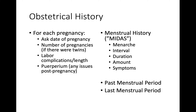Moving on to menstrual history, I use MIDAS: menarche, interval, duration, amount, and symptoms. Menarche is when the patient had her first period. Interval is how often — monthly — and you can tie in regularity there as well. Duration is how many days her period lasts. Amount is how much, usually measured in pads per day or tampons per day. Symptoms include things like dysmenorrhea, body malaise, and fatigue. You also want to know her past menstrual period — two periods before the visit — and her last menstrual period. Basically you're asking for the last two period dates.